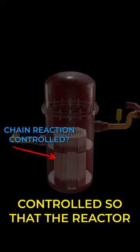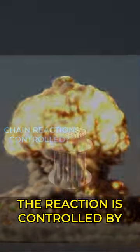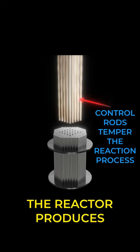How is the chain reaction controlled so that the reactor does not become an atomic bomb? The reaction is controlled by control rods that temper how much heat the reactor produces.